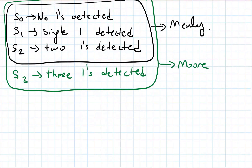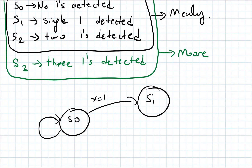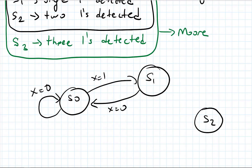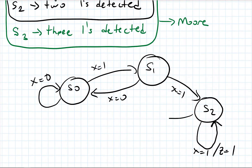Let's do our state diagram. I am in S0. If X is 1, I go to S1. If X is 0, I stay in S0. If I am in S1 and X is 0, I go back to S0. If I am in S1 and X is 1, I go to S2. In all these cases, my output is 0. If I am in S2 and X is 1, I stay in S2, and Z is equal to 1. If X is 0, I go to S0. So that is my state diagram.